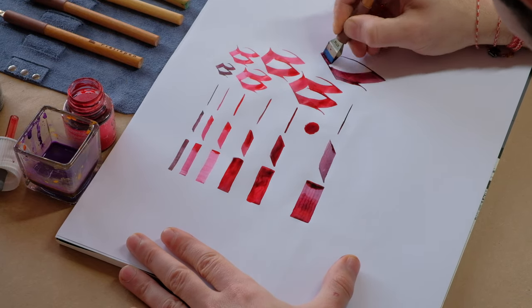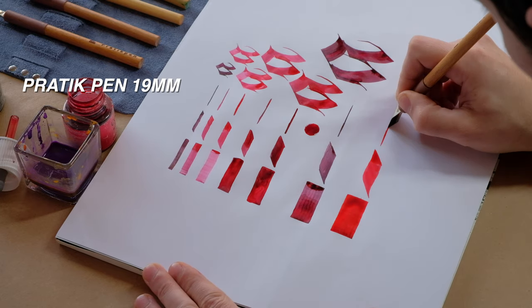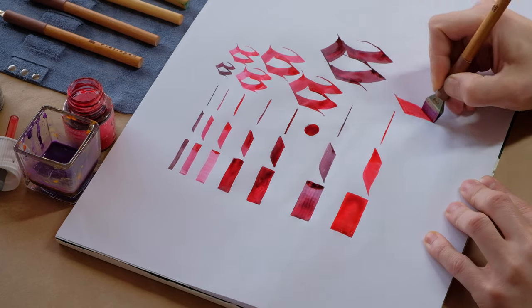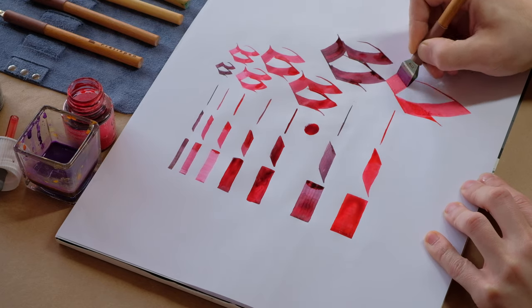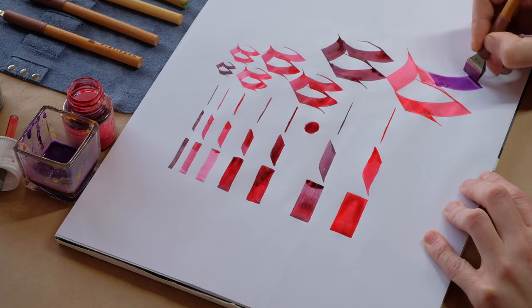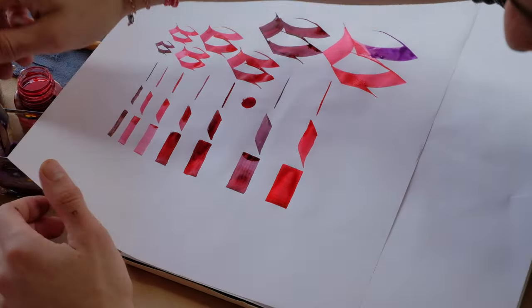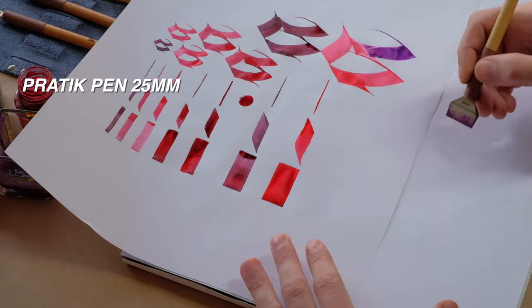Unlike the automatic pens, Pratik Pen writes better on one side of the tip where with automatic pens it is the same with both sides and you don't have this issue. This could be considered a minus but I don't think it's such a big deal and it's something that you can get used to.